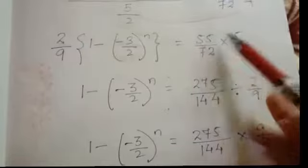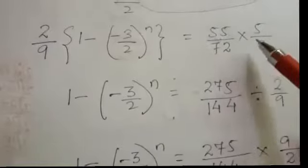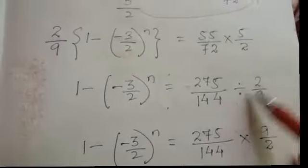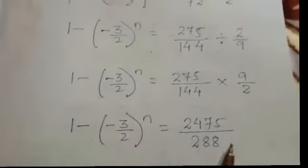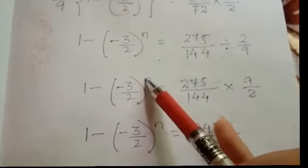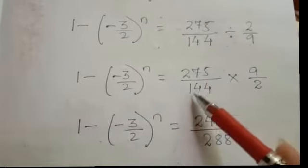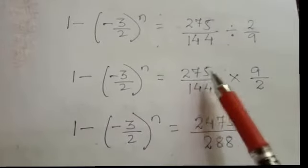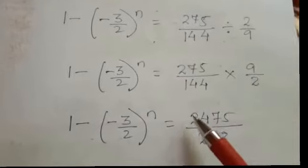This equals 55 by 72 into 5 by 2. 55 into 5 is 275, 72 into 2 is 144. Now 2 by 9 is in multiplication; we take it to the right-hand side as division, convert to multiplication by taking the reciprocal. We get 1 minus (minus 3 by 2) to the power n equals 275 by 144 into 9 by 2. We cannot cancel, so we multiply: 275 into 9 is 2475.